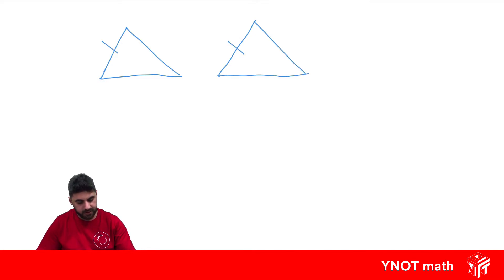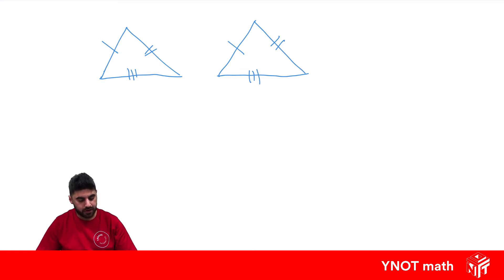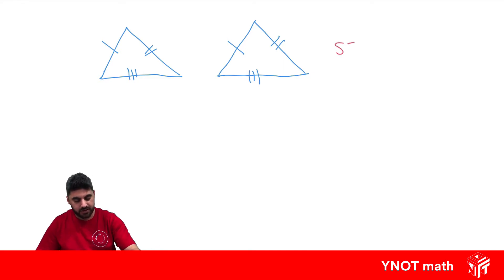If this side equals this side, this side equals this side, and this side equals this side, that will be enough information to know that those two triangles are congruent and everything about them is the same. We call this test Side-Side-Side, or SSS, because all three sides are equal to each other.